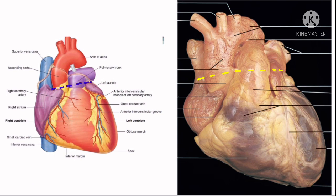The upper border is slightly oblique and is formed by the right and left atria, mainly by the latter. The upper border is obscured from view on the sternocostal surface because the ascending aorta and pulmonary trunk lie in front of it.